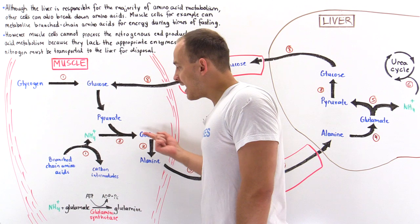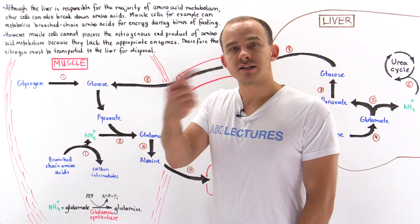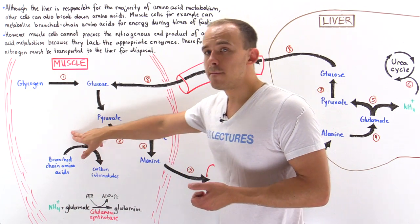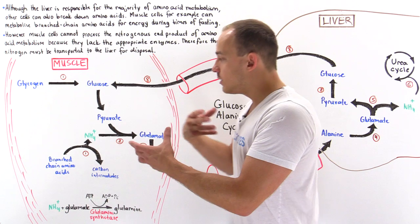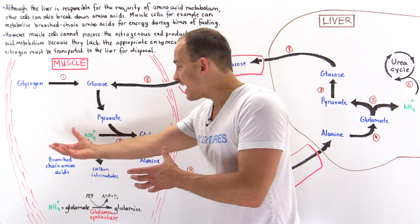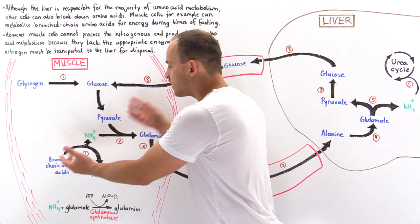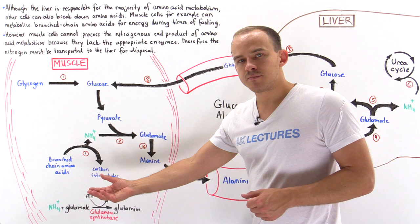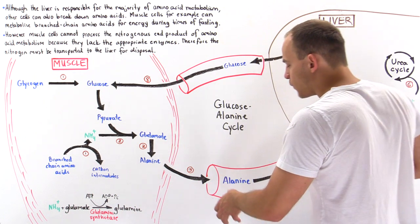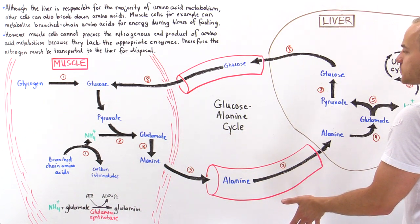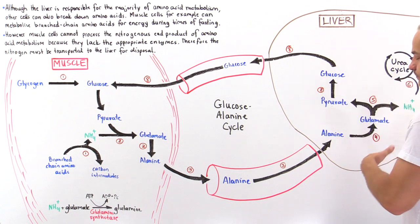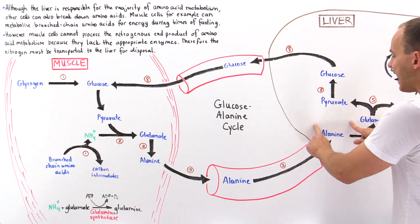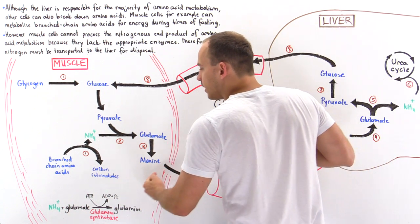The pyruvate is combined with ammonium to form glutamate, and then glutamate is transformed into alanine — this is actually the reverse of the pathway discussed in the previous lecture, where we broke down alanine into ammonium. Here, under other conditions, we do the reverse: ammonium combines with pyruvate to ultimately form alanine. It is the alanine that is transported out of the cell into the bloodstream and ultimately absorbed by hepatocytes, our liver cells.